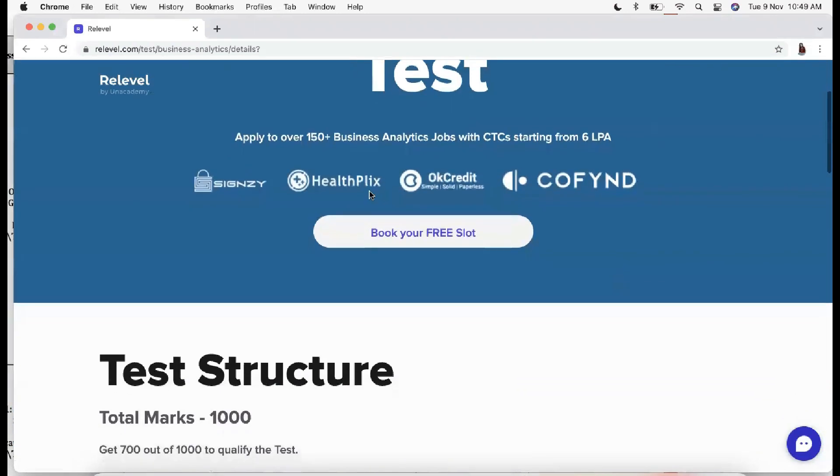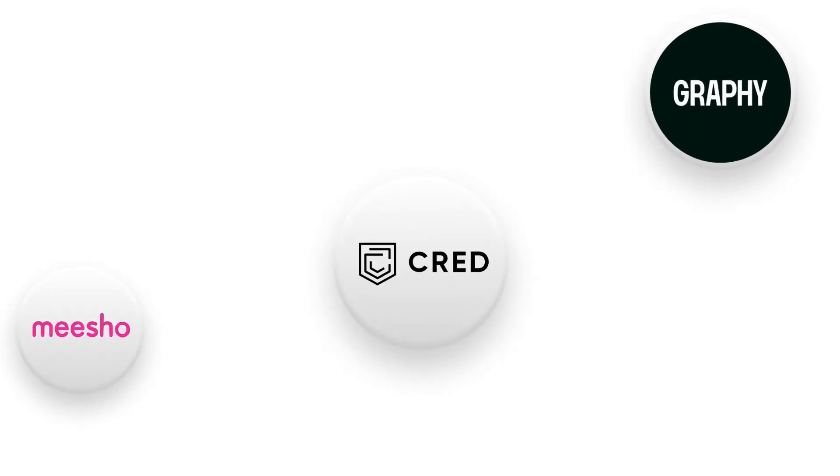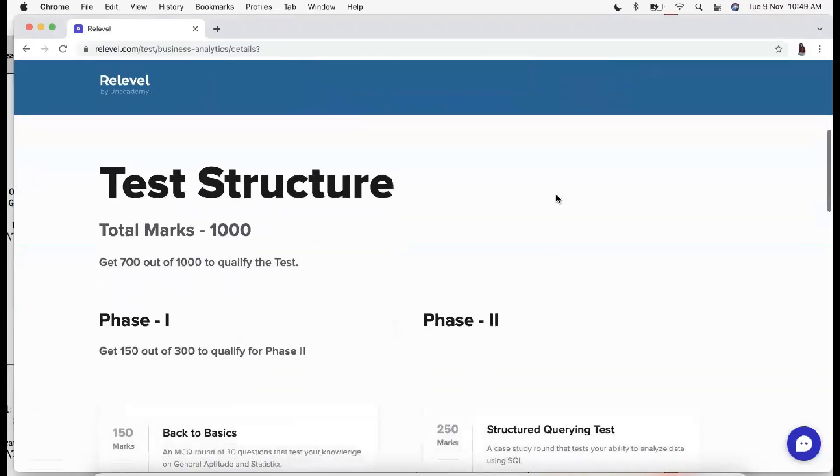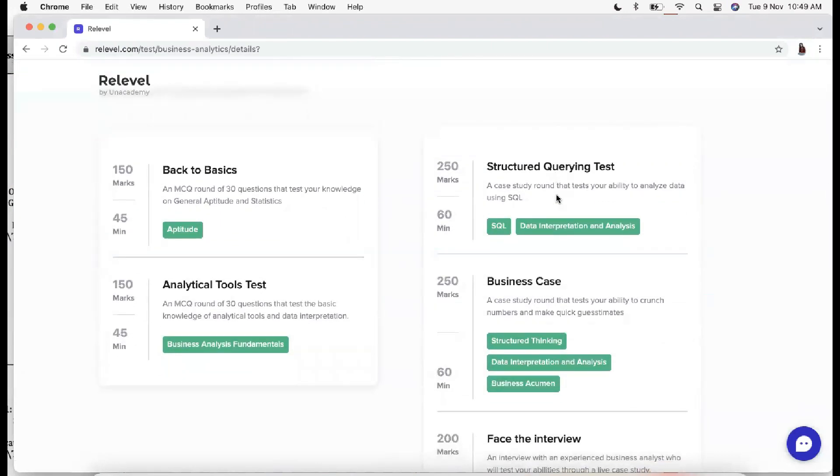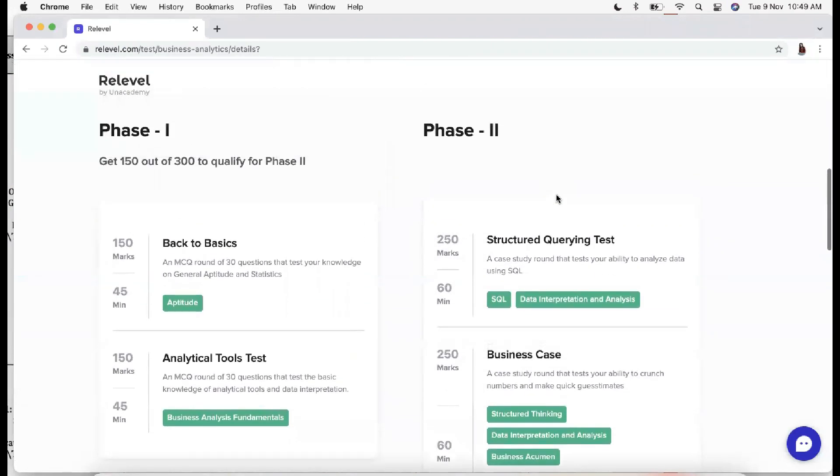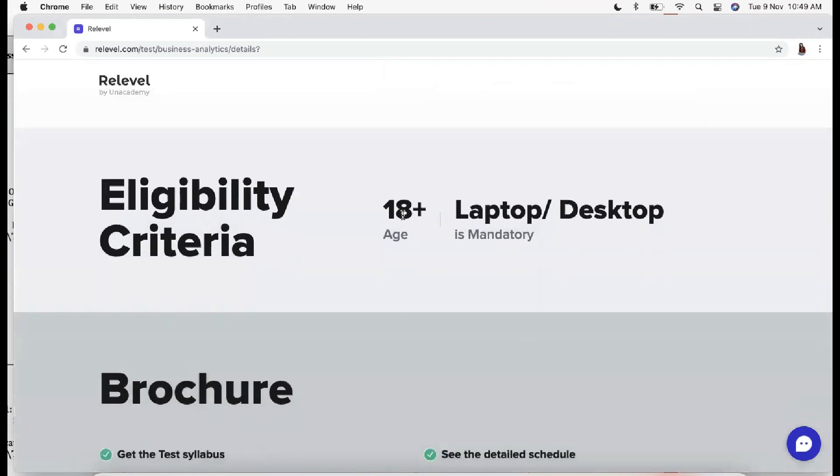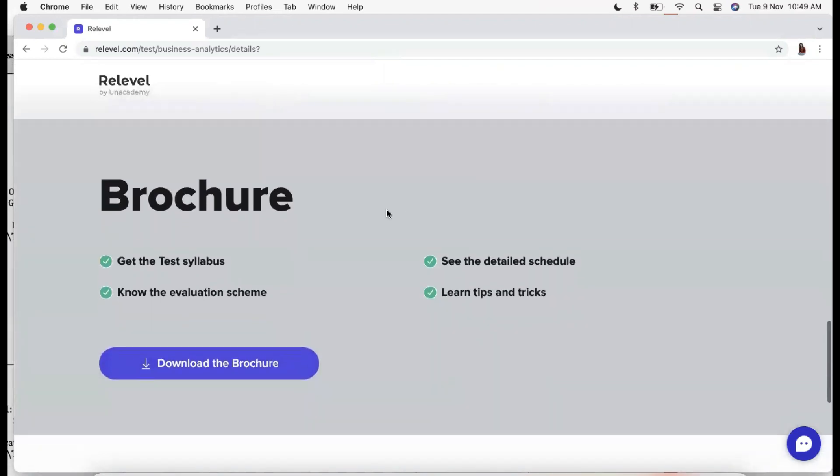So all you need to do is sign up on the platform today to check out all the companies like Cred, Upgrade, Razorpay, Yatra, etc. hiring from ReLevel. You can even try out the free sample paper to assess your skills for the test. You just need 150 marks in the first phase to qualify for the second phase. You can download the brochure for any test you're going to take, and they will cover the detailed syllabus of every test.